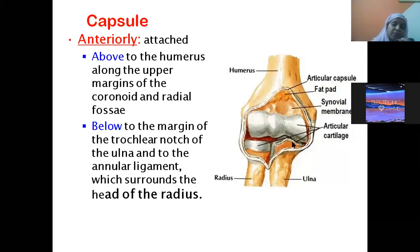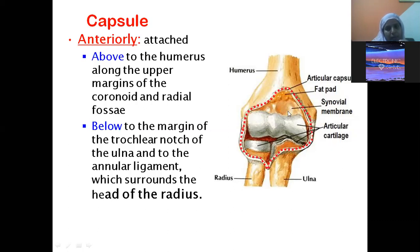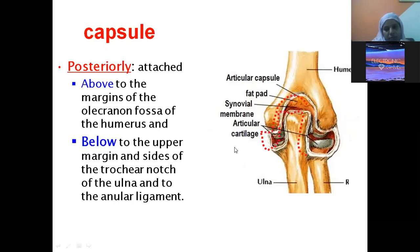The joint capsule attaches superiorly to the humerus at the upper margins of the coronoid fossa and radial fossa. Below, it attaches to the margins of the trochlear notch of the ulna and the annular ligament of the head of the radius anteriorly. Posteriorly, above it attaches to the margins of the olecranon fossa of the humerus, and below to the upper margin and sides of the trochlear notch of the ulna and the annular ligament.